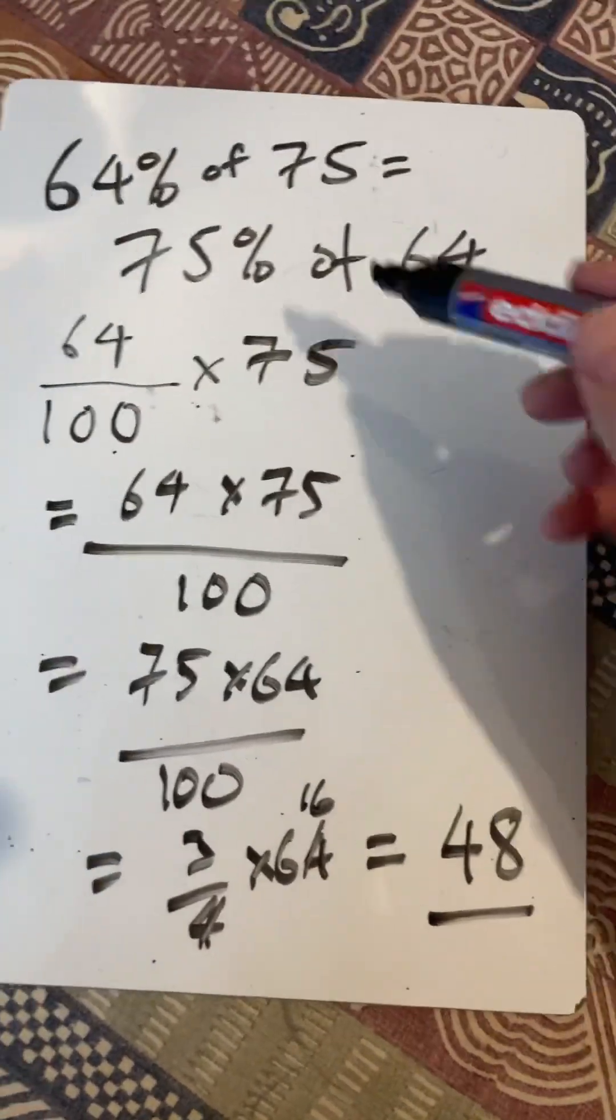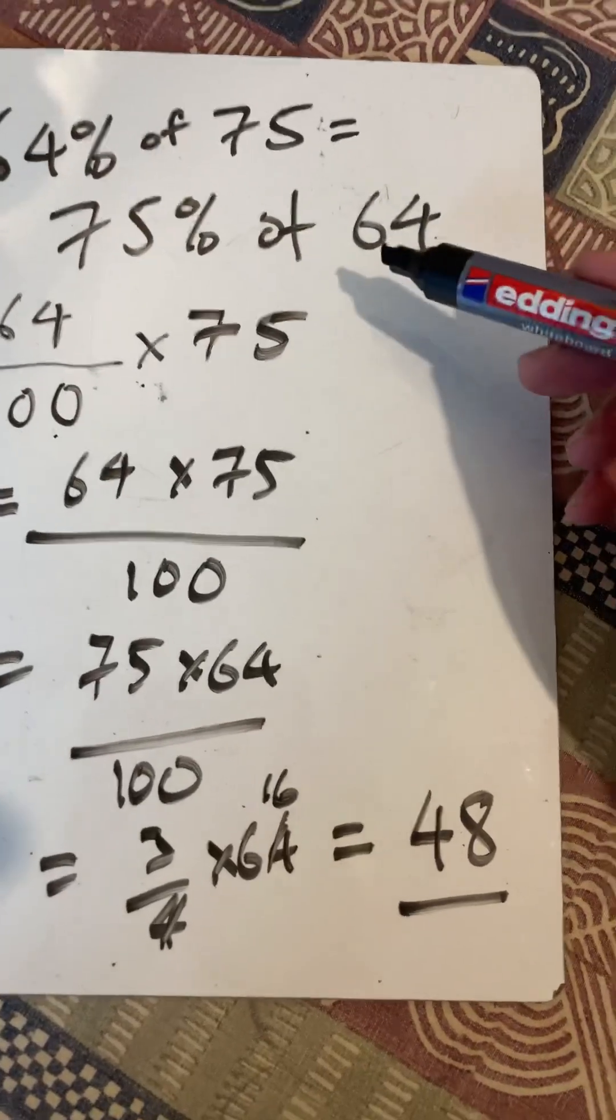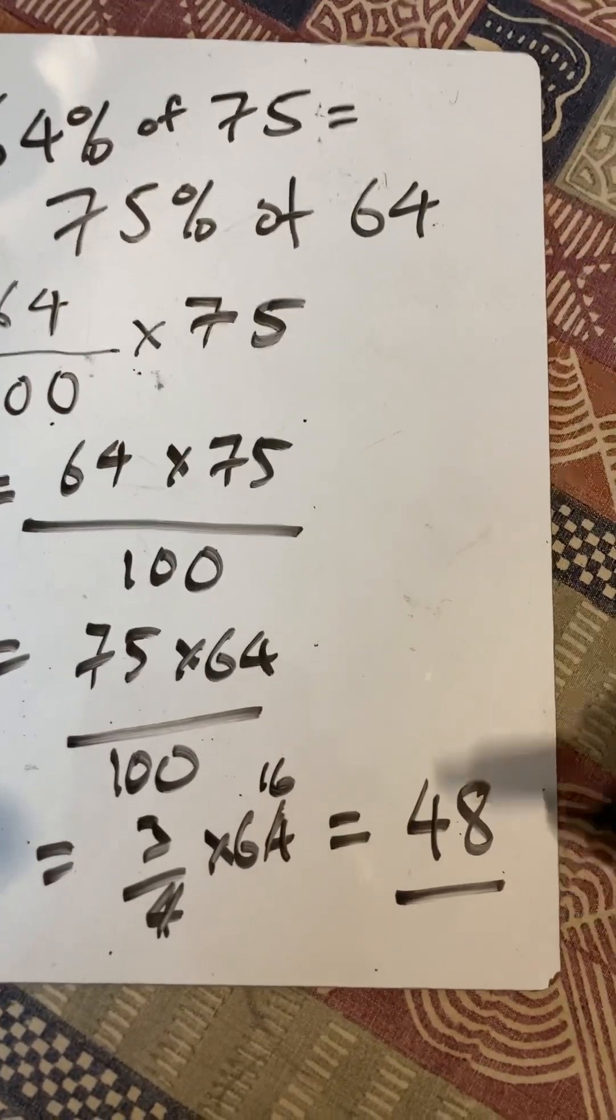So we know that 64% of 75 is the same as 75% of 64, and the answer is 48.